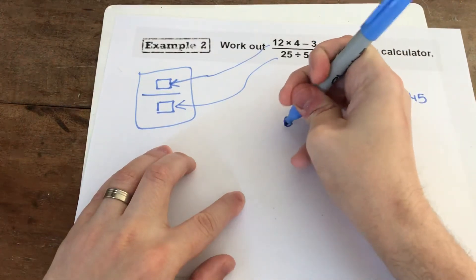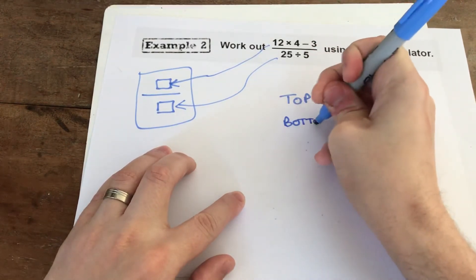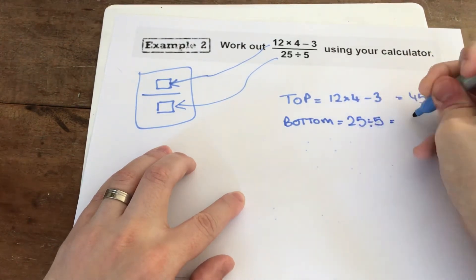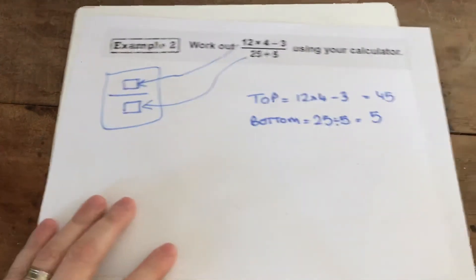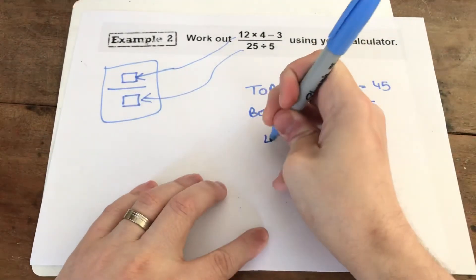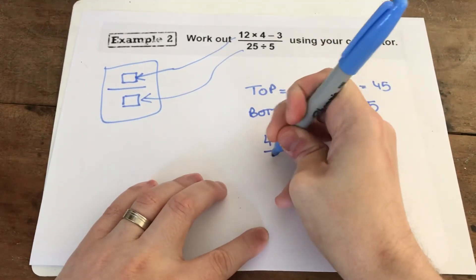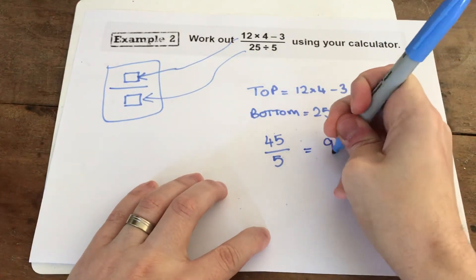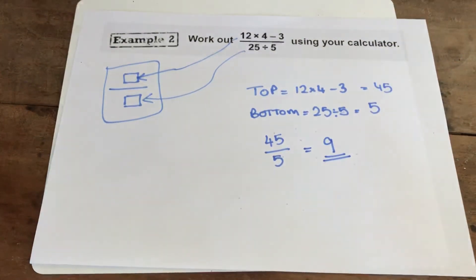And then we would do our bottom line, which is 25 divided by 5. That would just give us 5. And then from this, I would go 45 divided by 5. And I would write my top and my bottom as a fraction, like up here. And that gives me my final answer, which is 9.